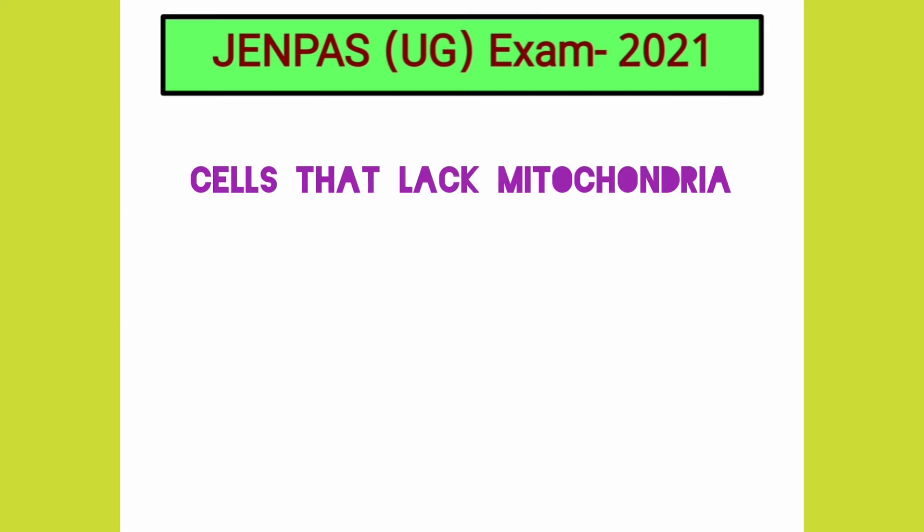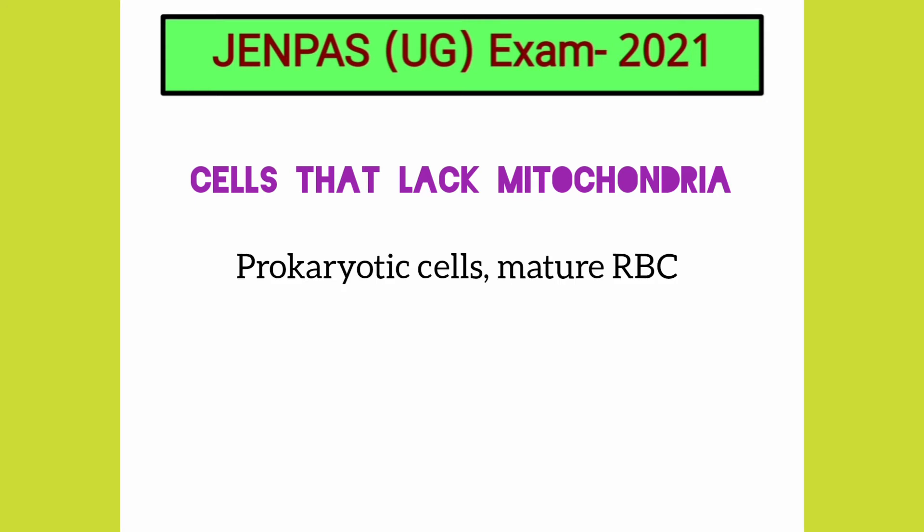Write the names of cells that lack mitochondria. Prokaryotic cells and mature red blood corpuscles lack mitochondria.